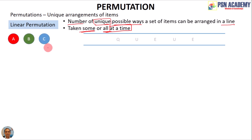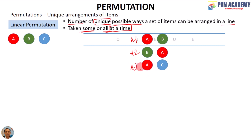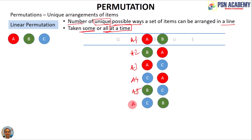Suppose there are three items and we take two items at a time from this source to store in a queue. The pairs we can form are: AB, BA, AC, CA, BC, and CB. So we have six unique arrangements when we consider two items from a source of three items.